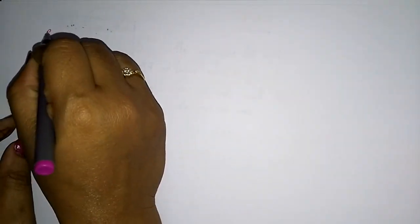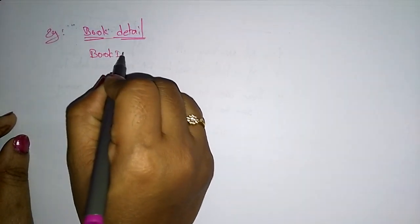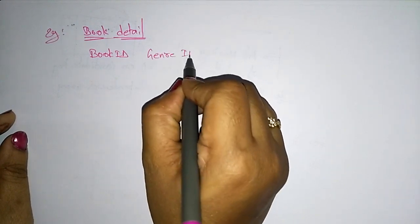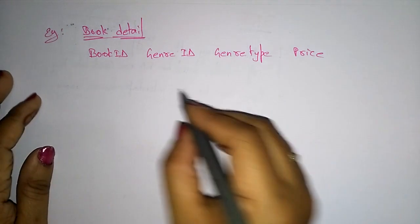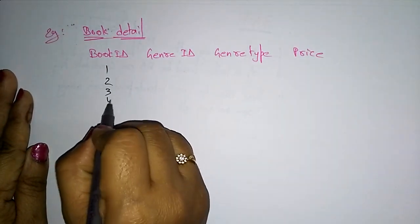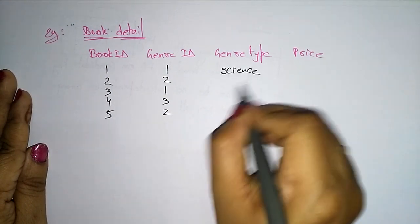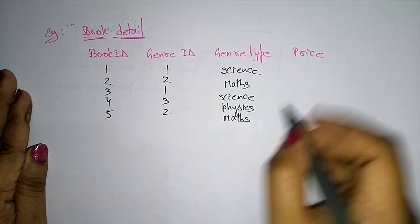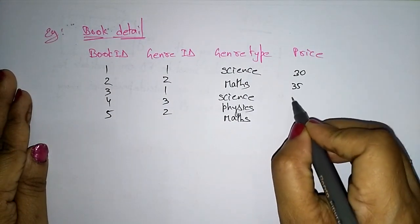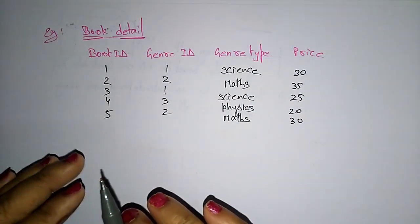Let me take one example - a 'Book Details' table. The attributes are: Book ID, Genre ID, Genre Type, and Price. The fields are: Book IDs 1, 2, 3, 4, 5; Genre IDs 1, 2, 1, 3, 2; Genre Types science, maths, science, physics, maths; and Prices 30, 35, 25, 20, 30. This table is not in 3NF.